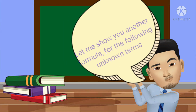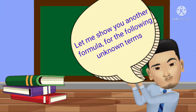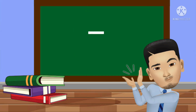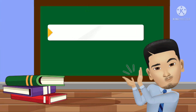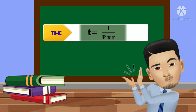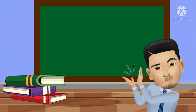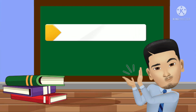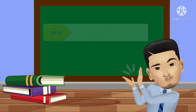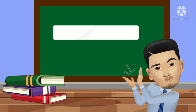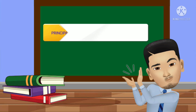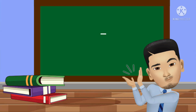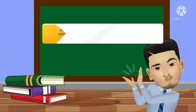Let me show you additional formulas for solving the unknown terms. For time: T = I ÷ (P × R). For the principal: P = I ÷ (R × T).